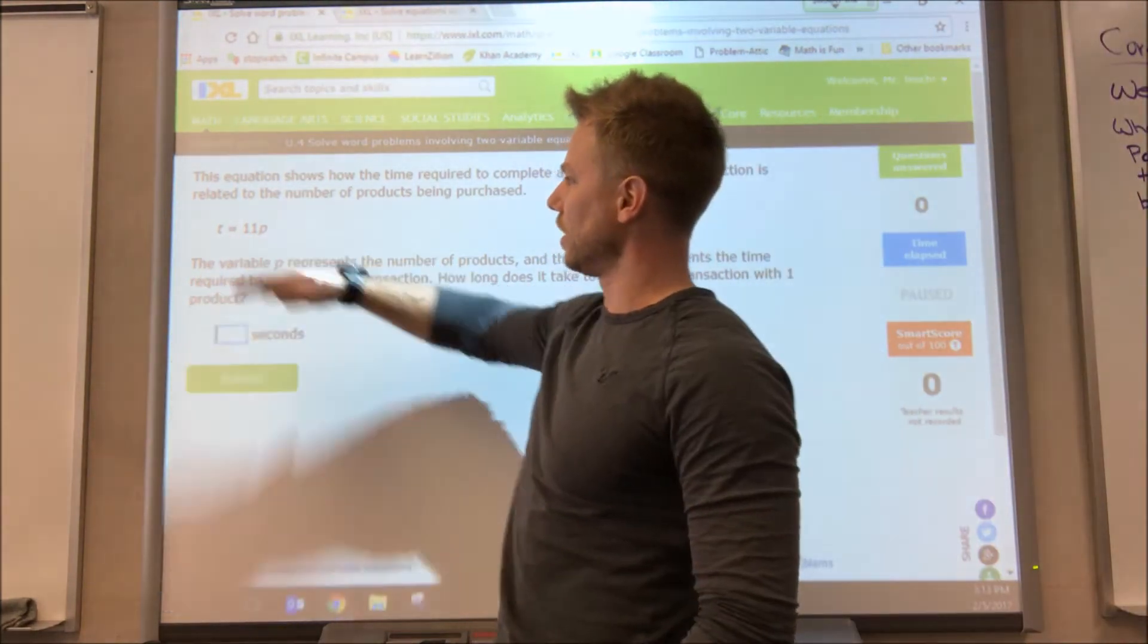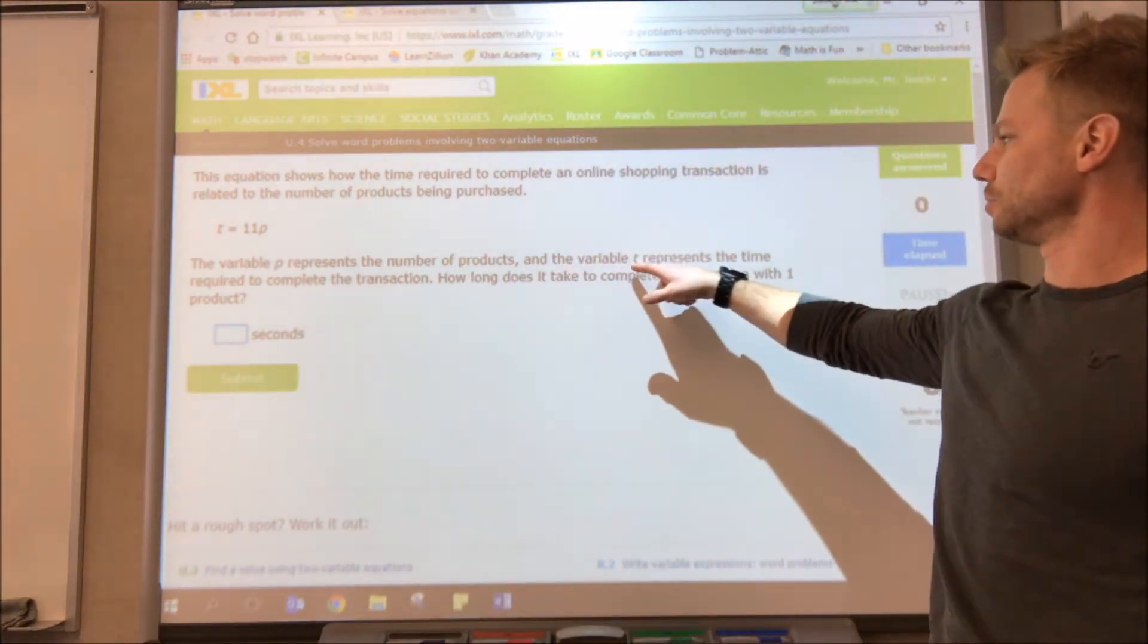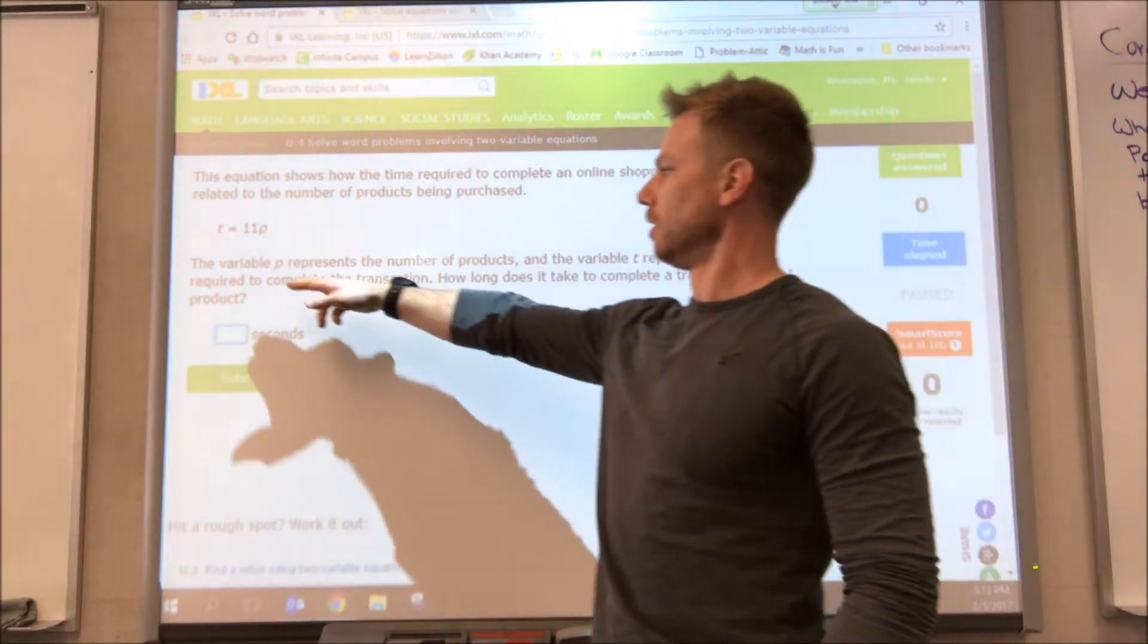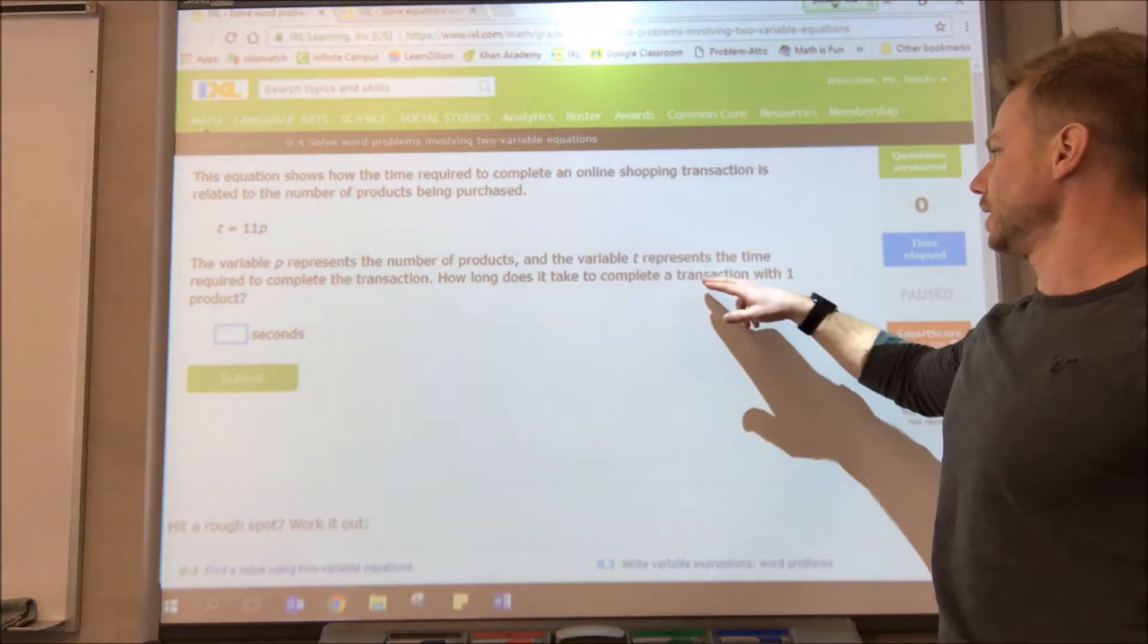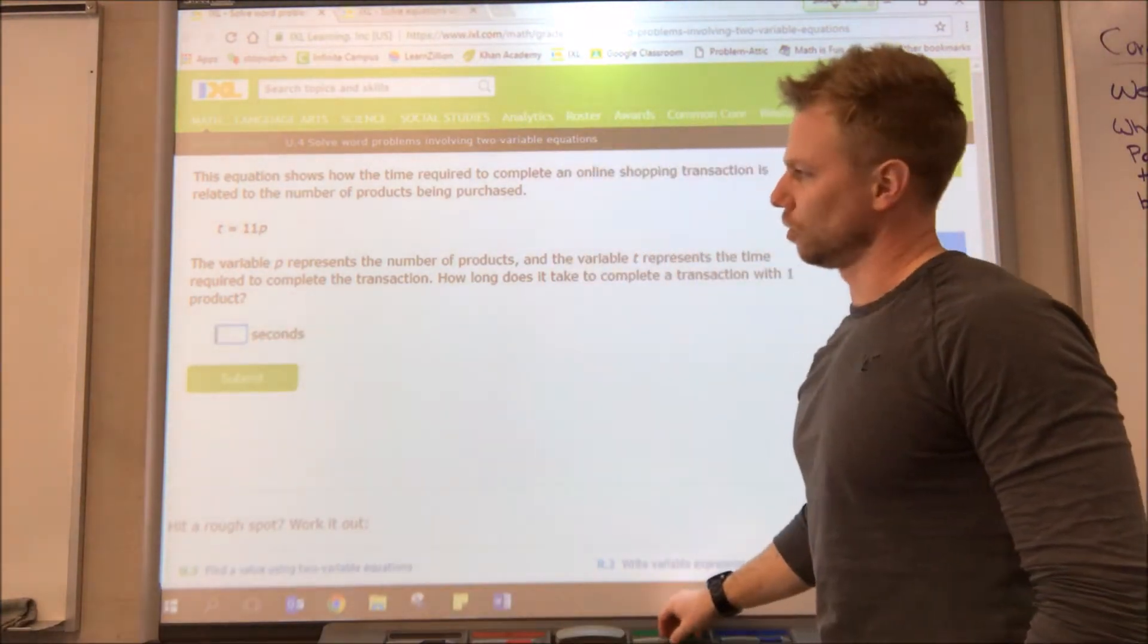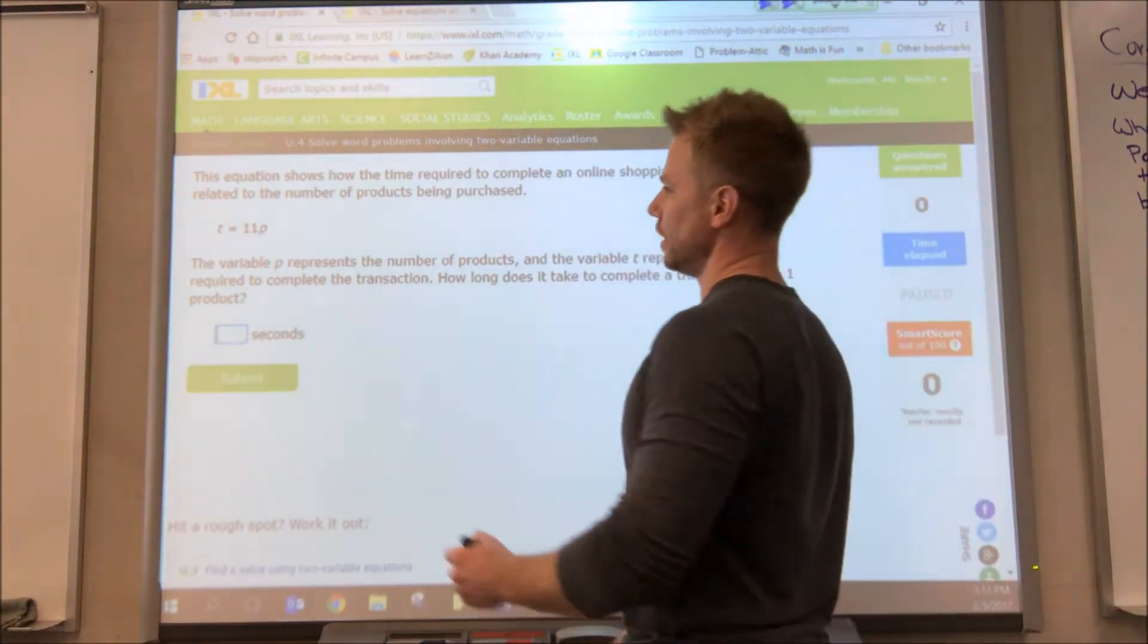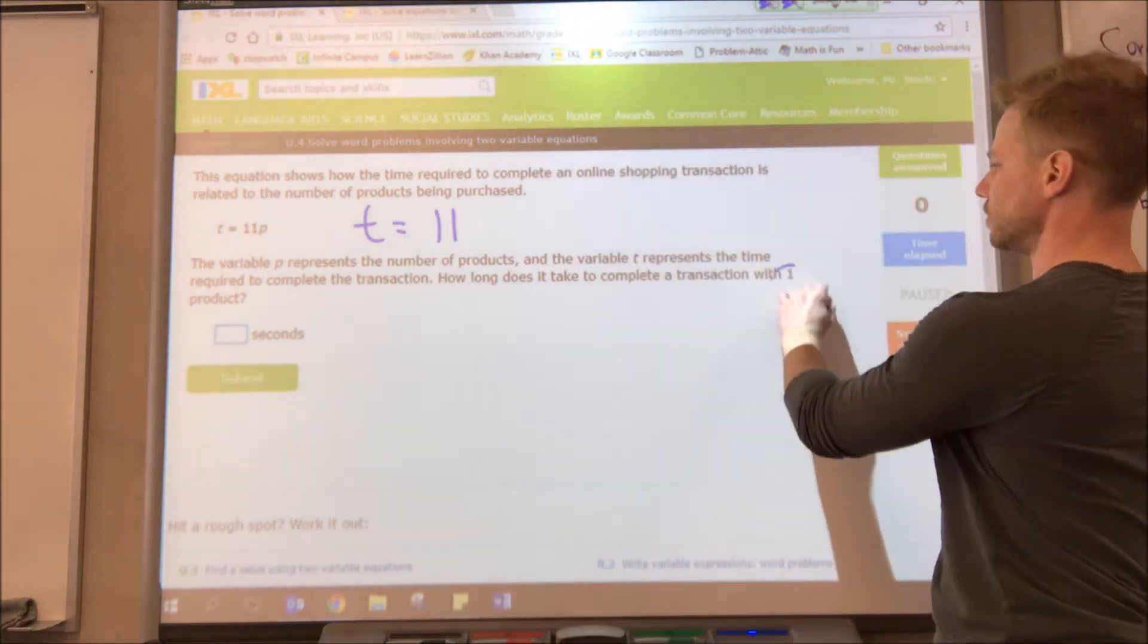We have set t equals 11p. The variable p represents the number of products, the variable t represents the time required to complete the transaction. How long does it take to complete a transaction with one product? So what we're going to do in place of p, we're going to put the number for p, which in this case is one because it's one product.